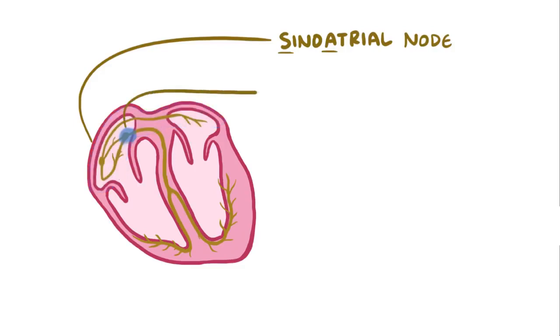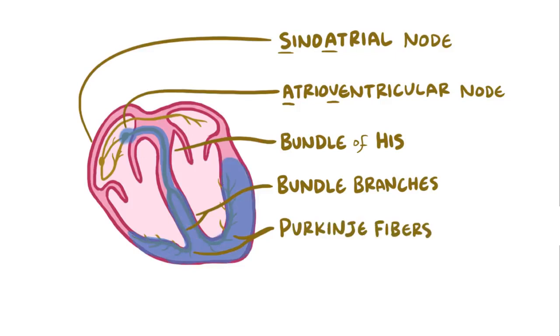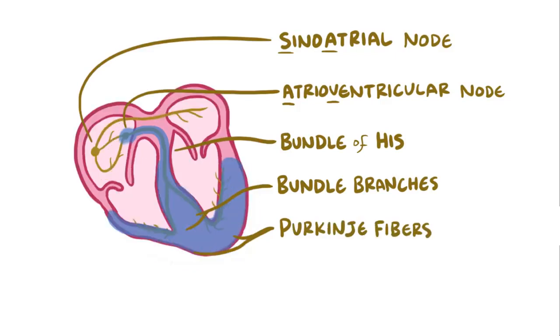And then that signal moves to the atrioventricular or AV node, where the signal is delayed for a split second and then goes down into the ventricles or lower chambers, where it moves down into the bundle of hiss into the left and right bundle branches, and into each ventricle's purkinje fibers, causing the ventricles to contract as well.